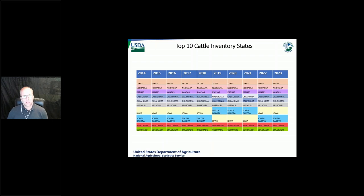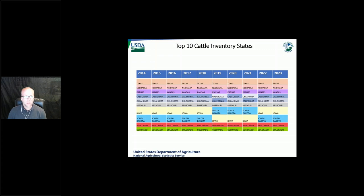Since 2014, the cattle inventory for the top 10 states as of January 1, the top three states have not changed over that timeframe. However, California and Oklahoma have swapped rankings, as has Iowa and South Dakota. It's good to see what states and how production does change over time with various industry commodities in the United States.